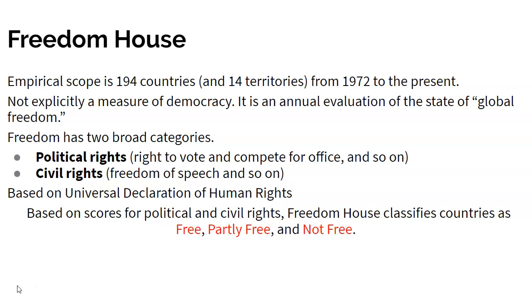Like Polity IV, Freedom House groups countries into one of three categories: free, partly free, and not free. Although sometimes people use the political and civil rights scores rather than the overall classification, and the scores ranging from one to seven provide a more disaggregated, fine-grained measure of democracy.